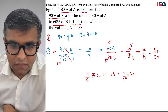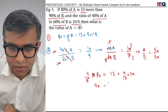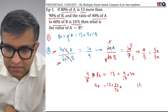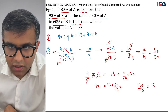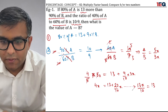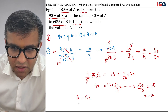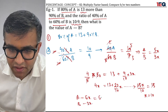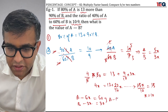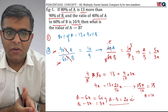Continuing: 4x = 13 + 27x/10. Moving terms: 40x/10 − 27x/10 = 13, so 13x/10 = 13. The 13s cancel, giving x = 10. Therefore A = 5x = 50 and B = 3x = 30. The answer to A minus B is 50 − 30 = 20.